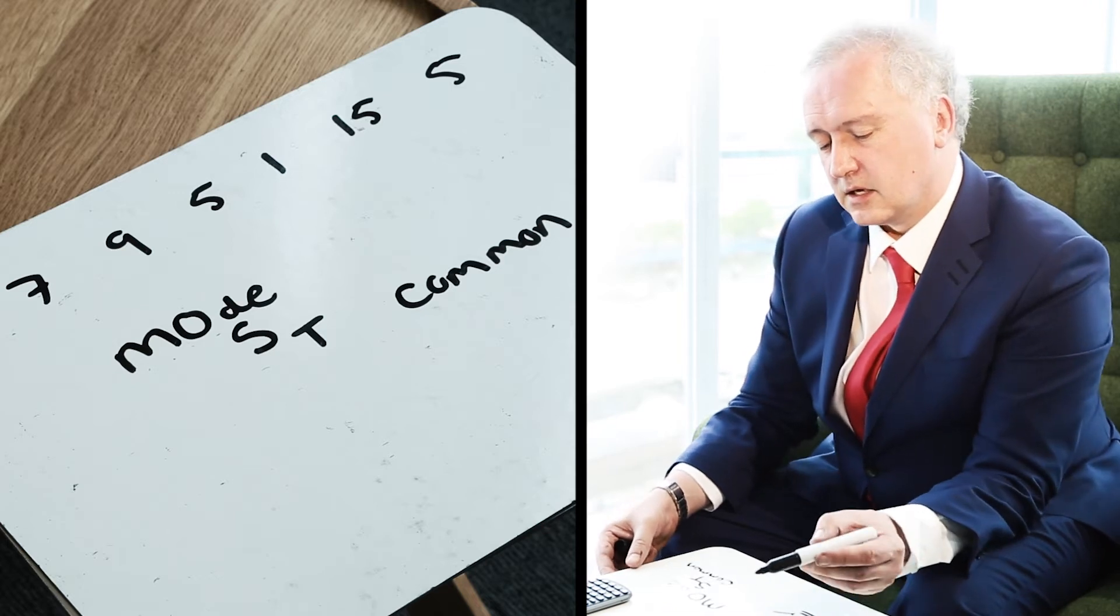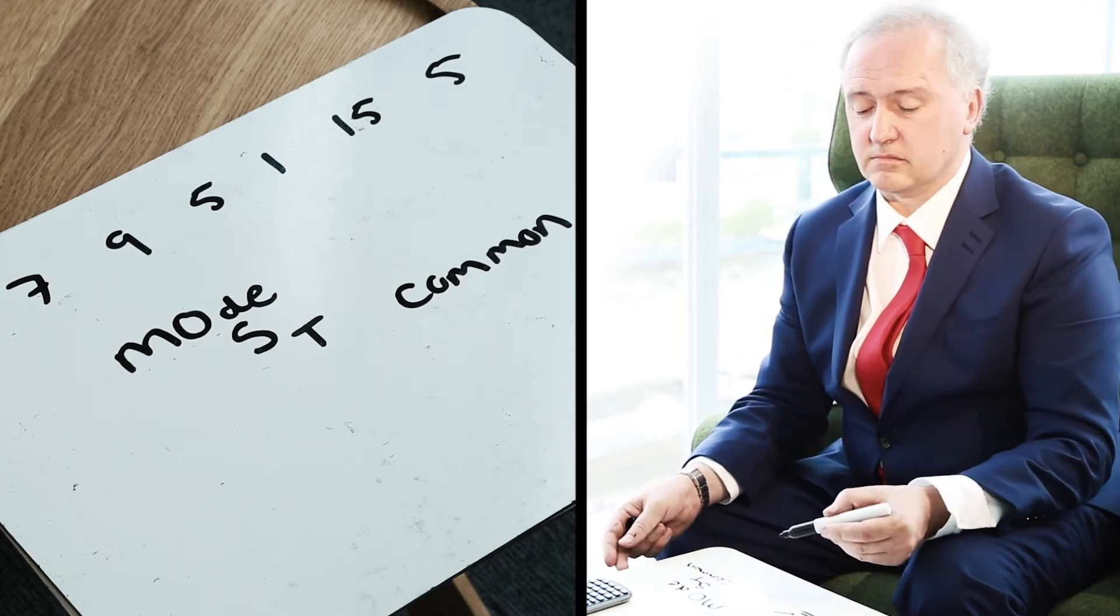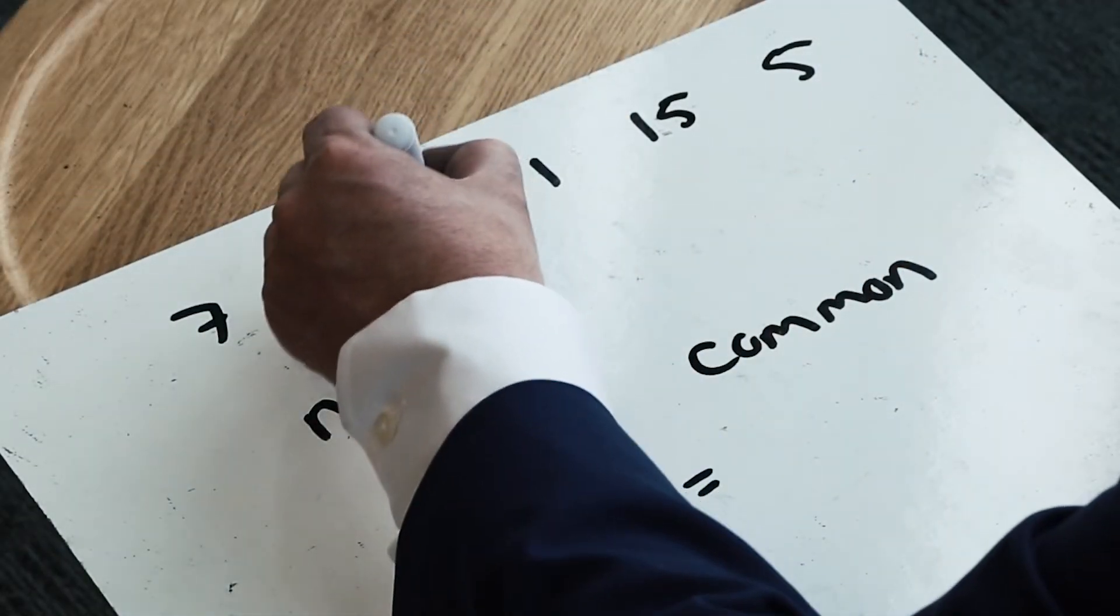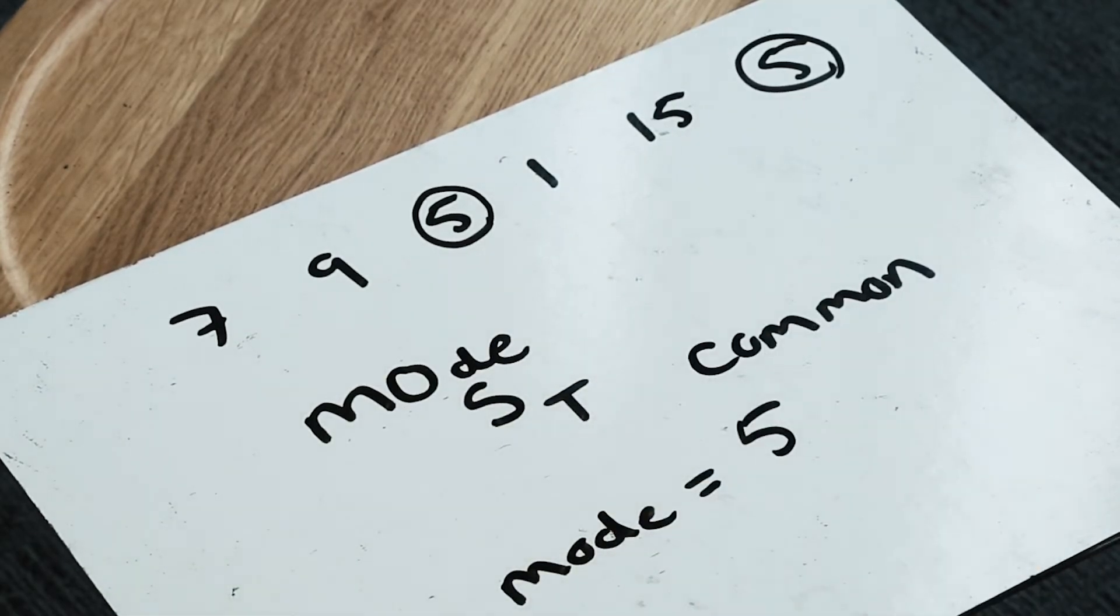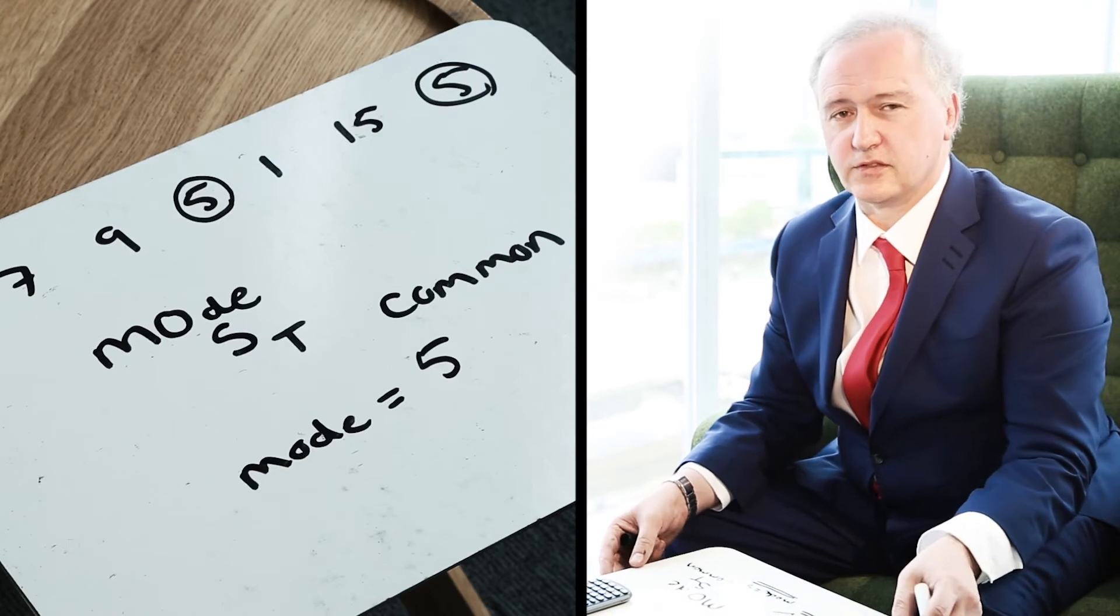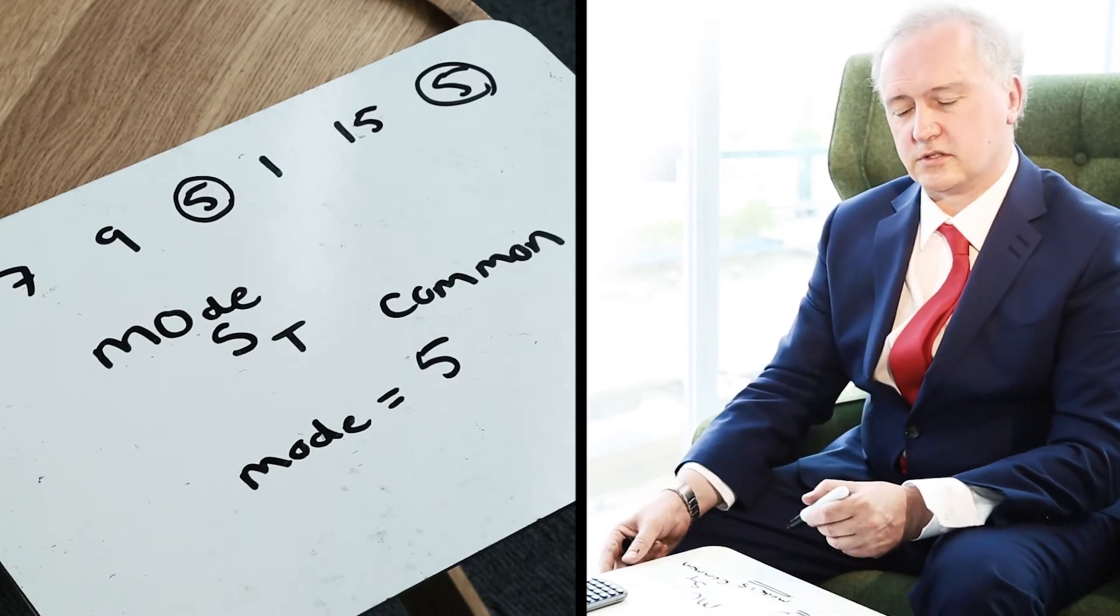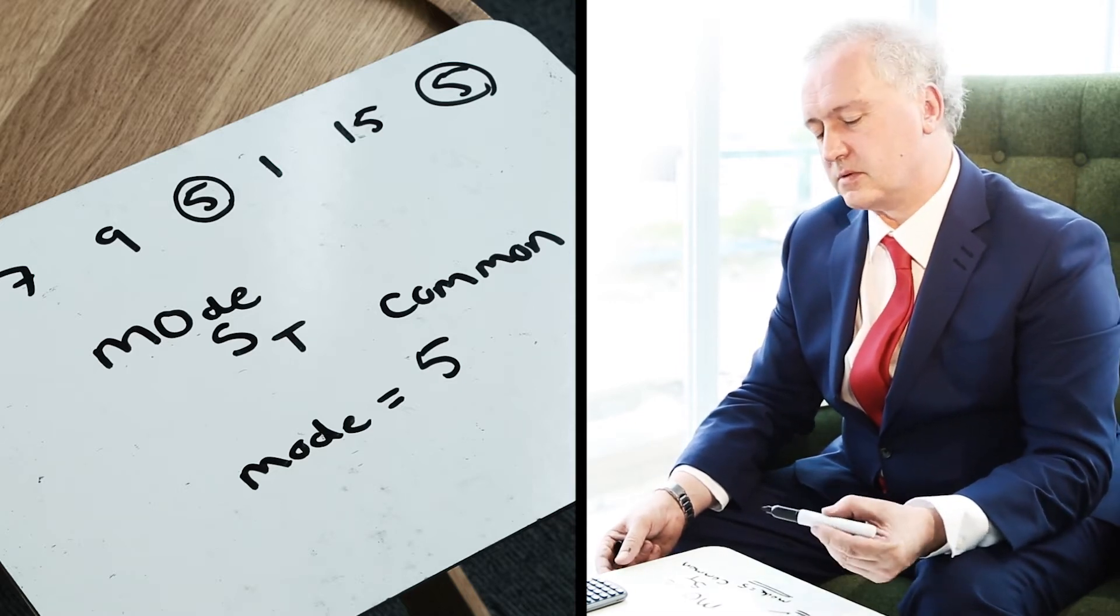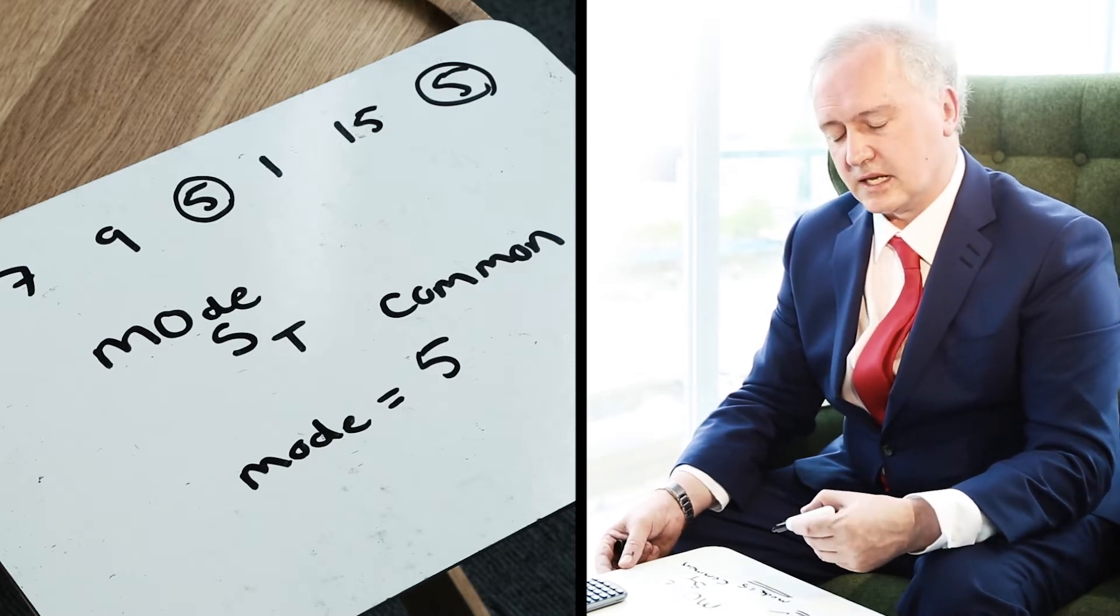Looking at my data set, I've got 7, 9, 5, 1, 15, and 5, and I can see that the number 5 appears twice, so 5 is my mode. So I can write mode equals 5. It's very easy to find, but it has disadvantages as well as advantages. Sometimes there might not be a mode, sometimes there will be two different numbers as the mode, but the mode is the most common number in a data set.